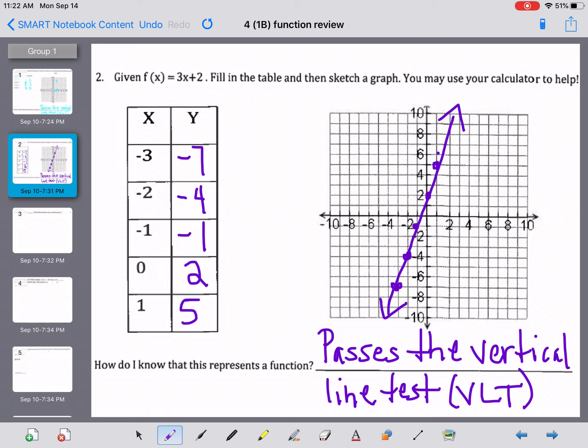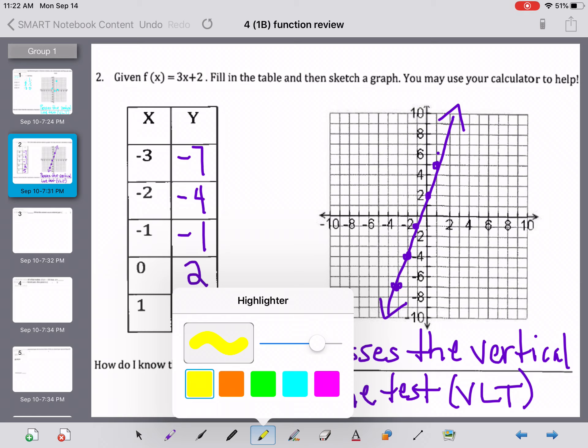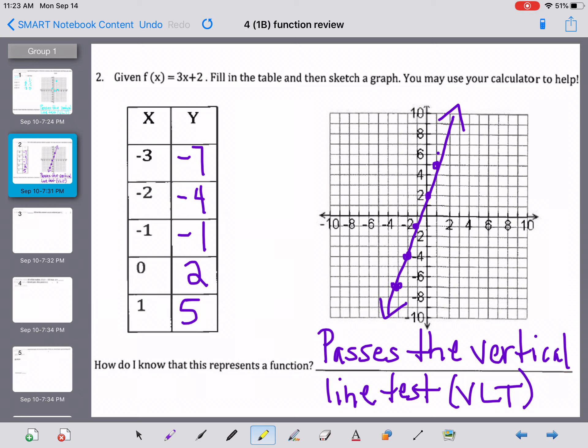I am going to switch up here my pen color for a moment and just show you here how the vertical line test works. Don't do this to your paper, it'll be confusing afterwards. But what the vertical line test says is that you can draw any vertical line on this graph and any vertical line never touches the graph more than once. So if I start drawing these yellow lines here, I can draw as many vertical lines as I want, but any of those vertical lines never touch that purple line more than once. And that's what it means to pass the vertical line test.